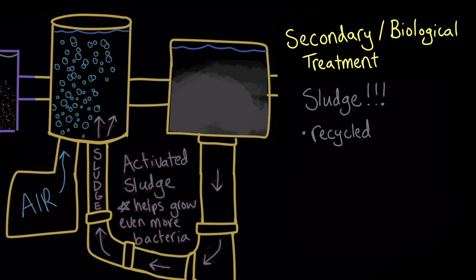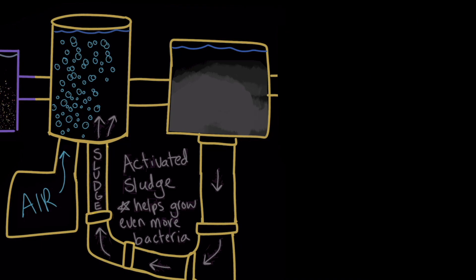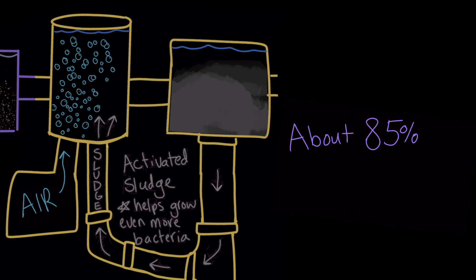The sludge collected from primary and secondary treatment can be dried and buried as a waste product, or dehydrated and heated to make a soil-like material called biosolids that can be used in agriculture. By the time the primary and secondary treatment steps are completed, about 85% of the organic pollution has been removed from the wastewater.